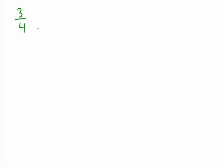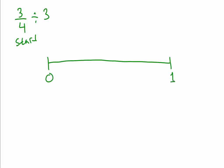I want to start with something relatively simple. Say we have three-fourths and we divide it by three. You have to understand that we have to start with three-fourths. So let's make a number line and put zero and one. Three-fourths means we have to split this into four parts, so chop it in half — make sure it's pretty close to half — and then chop each of those halves in half.